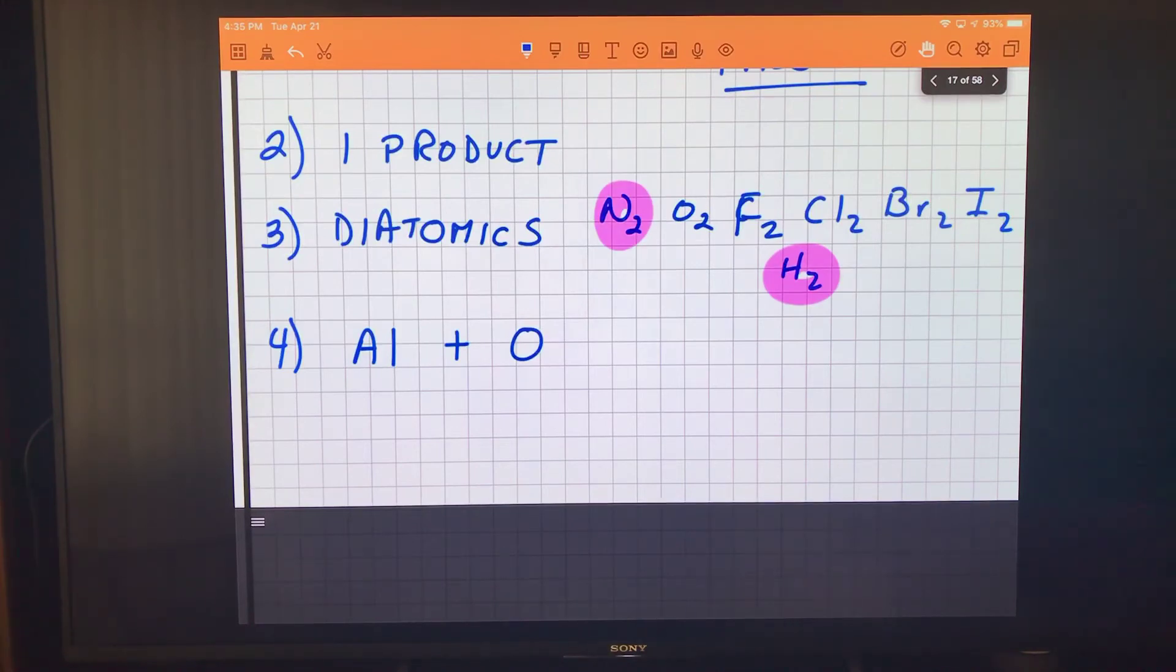Our second step: put them together. Which one comes first? Aluminum does because it's furthest to the left in the periodic table. Notice I'm leaving lots of space there so that we can add numbers in a little bit. Step number three: diatomics. There it is, oxygen walking by itself, it's got to have a little two behind it.